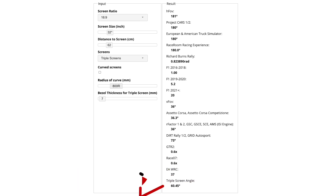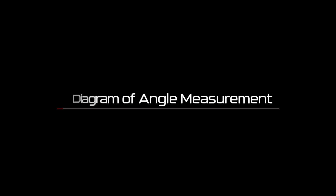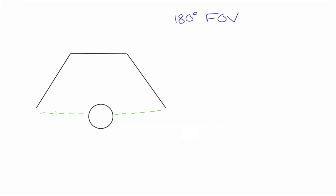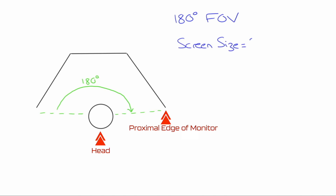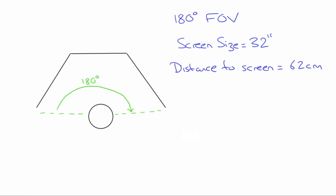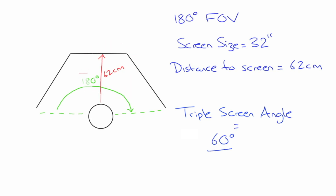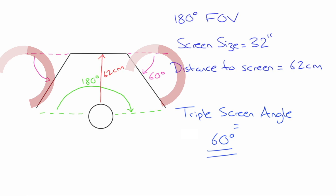You can then play around with your distance from the screen and see the required monitor angle to achieve your desired FOV. I felt a 60-degree angle would work well with my room and a distance of 62 centimeters from the monitor felt comfortable — but once selected, you must stick to them. To achieve a 180-degree field of vision, your eye line needs to be in line with the most proximal edge of the monitor. My screen size is 32 inches; the distance from screen to eyes is 62 centimeters, and my triple screen angle is set to 60 degrees.